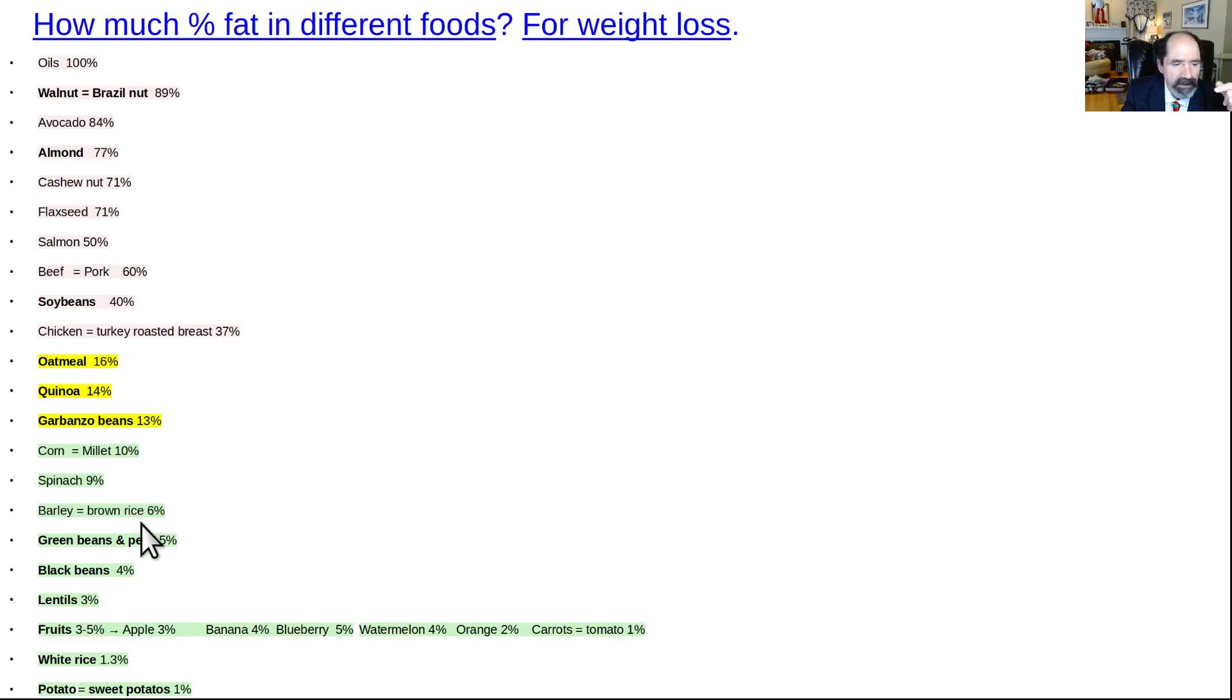Spinach, 9% fat. Barley and brown rice, about 6% fat. Okay, so here's another surprise. Green beans and peas, about the same, pretty good, 5% fat. So there's a bean, low in fat. Most beans are 25% to 30% protein, a little higher than I would want. But at least these ones are low in fat. Green beans and peas and black beans are 4% in fat. Lentils are 3% in fat.